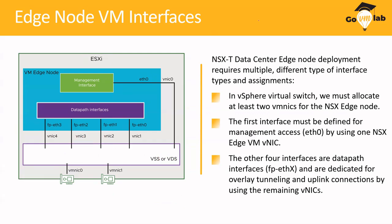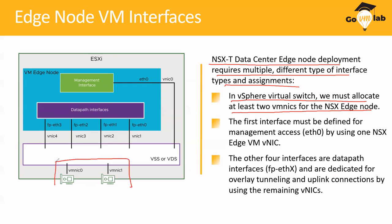NSX Data Center Edge Node deployment requires multiple different types of interfaces. In vSphere virtual switch, you must allocate at least two vNICs for the edge node. The moment you deploy an NSX edge node, you should have at least two vNICs — that is a VMware requirement, with at least two uplinks reserved for redundancy.